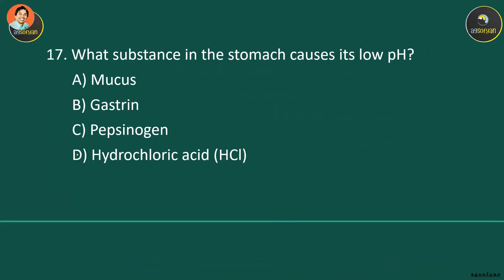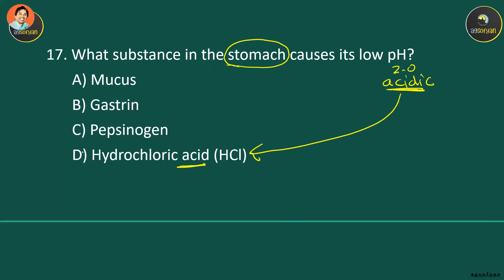What substance in the stomach causes its low pH? Our stomach pH is around 2, which is acidic. The substance causing this acidic condition is hydrochloric acid (HCl). The stomach cells produce hydrochloric acid, making the stomach juice very acidic.